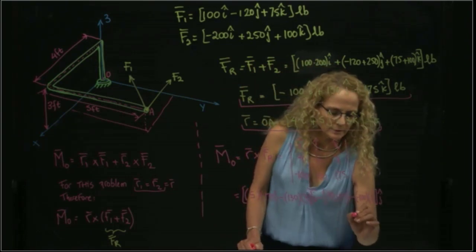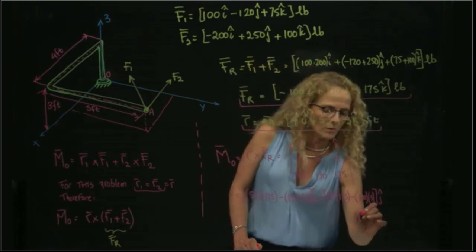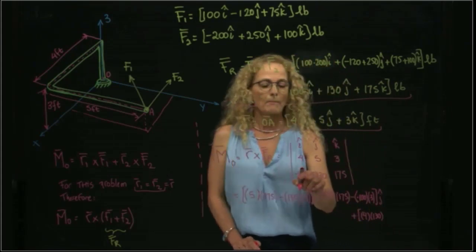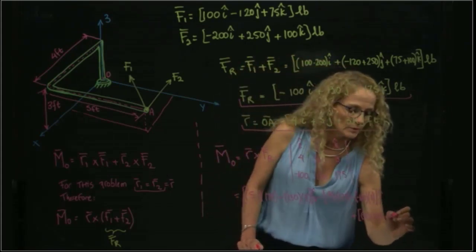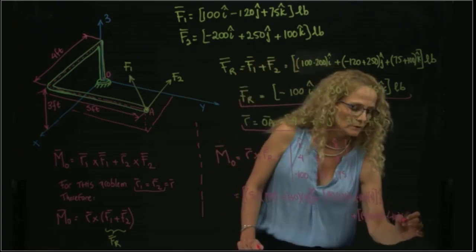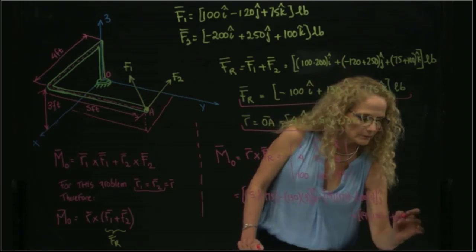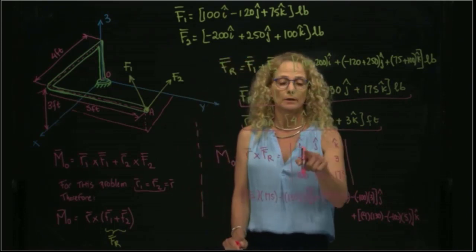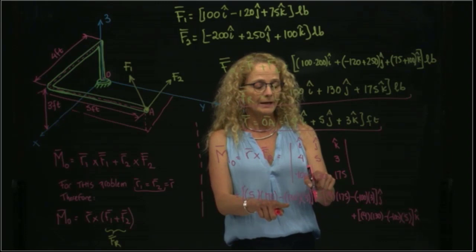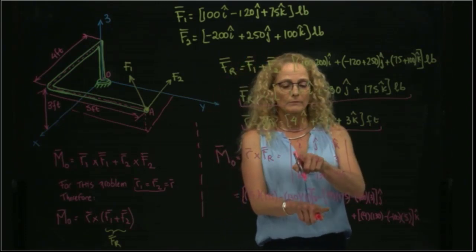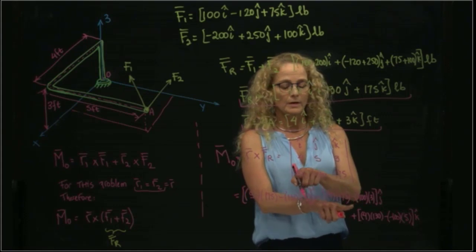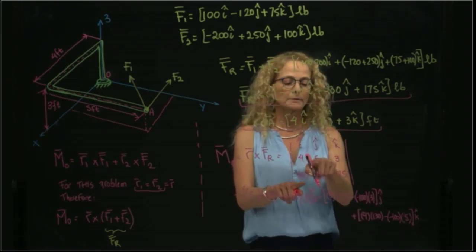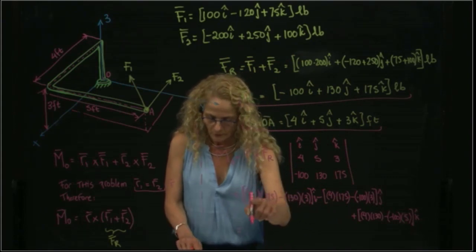And for K, it will be 4 times 130 minus minus 100 times 5. As you see, if you lose a little bit of attention, you get that wrong. So let's review it again. For I, we have 5 times 175 minus 130 times 3. For J, we have 4 times 175 minus minus 100 times 3. And for K, we have 4 times 130 minus minus 100 times 5. We do out these multiplications.